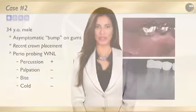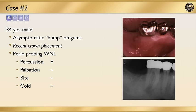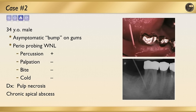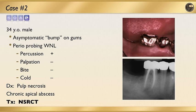Case two: a 34-year-old male with an asymptomatic bump on the gums, with a crown placed not long ago. Tests: periodontal probing within normal limits, percussion positive, palpation negative, bite negative, cold test negative. We trace the sinus tract, and radiographically it is draining from the mesiobuccal root. The negative cold response indicates no vital nerve tissue — we are dealing with pulp necrosis and a chronic apical abscess. Treatment is non-surgical root canal therapy, and within days or weeks the draining sinus tract will heal.